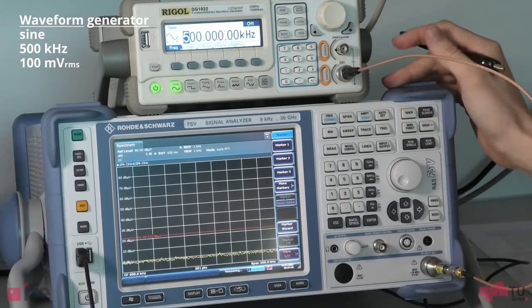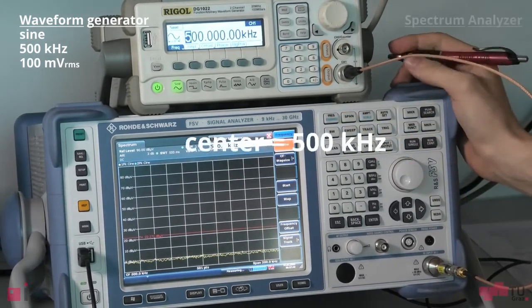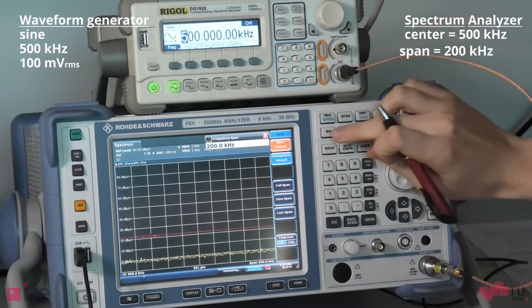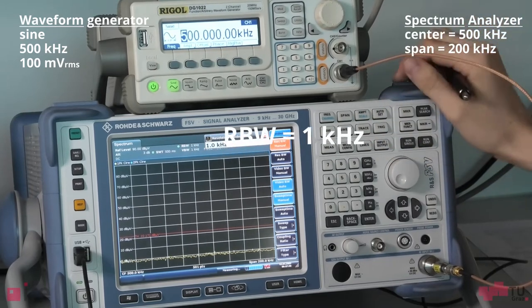The spectrum analyzer is set to measure at a fixed center frequency of 500 kilohertz with a span of 200 kilohertz and I have set the resolution bandwidth to 1 kilohertz.